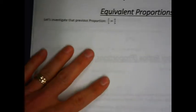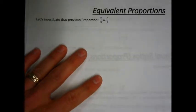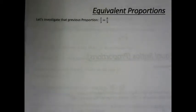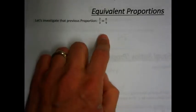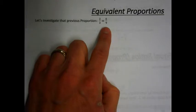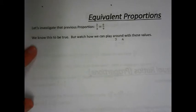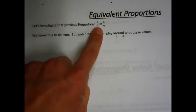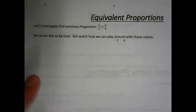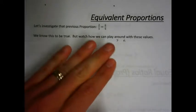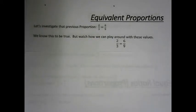Let's talk about equivalent proportions. We're going to take one proportion and mess around with it. Let's investigate the previous proportion: 2 thirds is the same thing as 6 ninths. We know this to be true — it's a true statement. Those two things are equal.